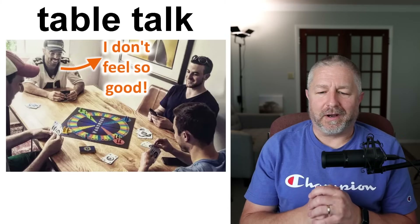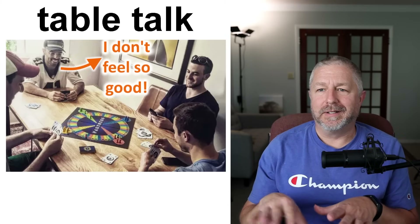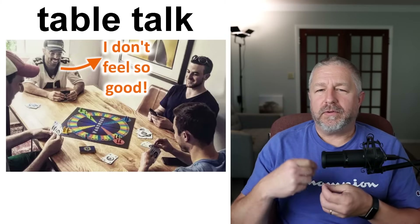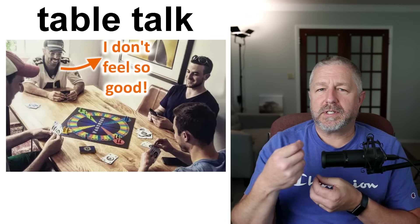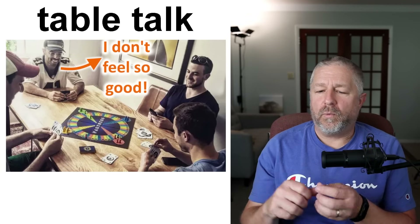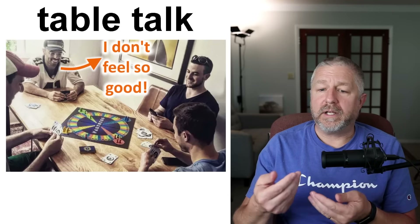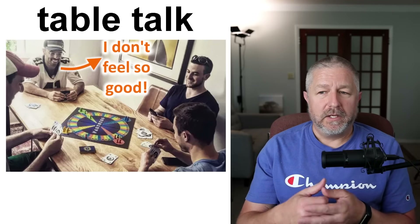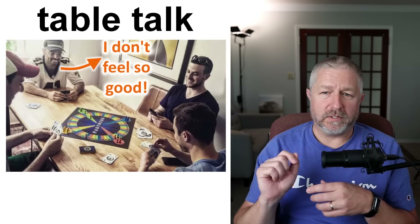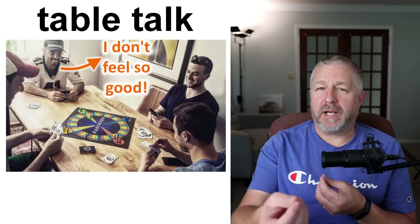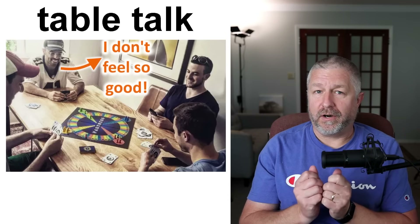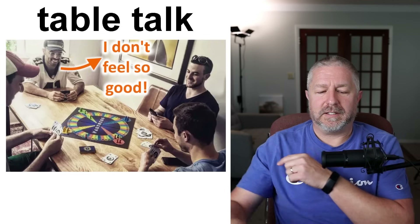There's something called table talk. Table talk is anytime — if you have a partner — you say something or do something so they kind of know what cards you have or what you're going to do in the game. Let's say Jen and I are playing Euchre and I touch my nose a few times — I might be communicating to Jen that I have good cards.